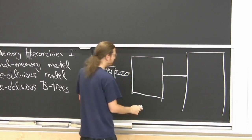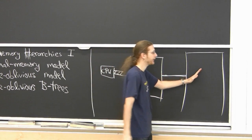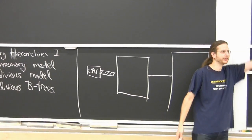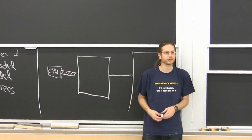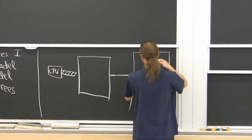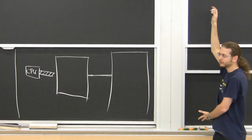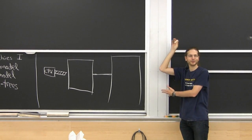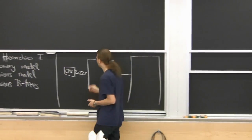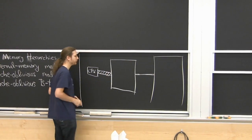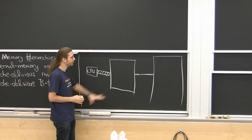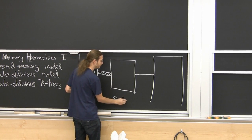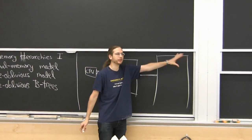In real computers, this keeps going: level one cache, level two cache, level three cache, then main memory, then disk, then network. Usually the disk has a cache. So you have this very deep hierarchy, typically growing exponentially in size and also growing exponentially in latency. You'd like to design data structures that most of the time are working at the cache level, because that's really fast, and as little as possible go to the deeper levels.